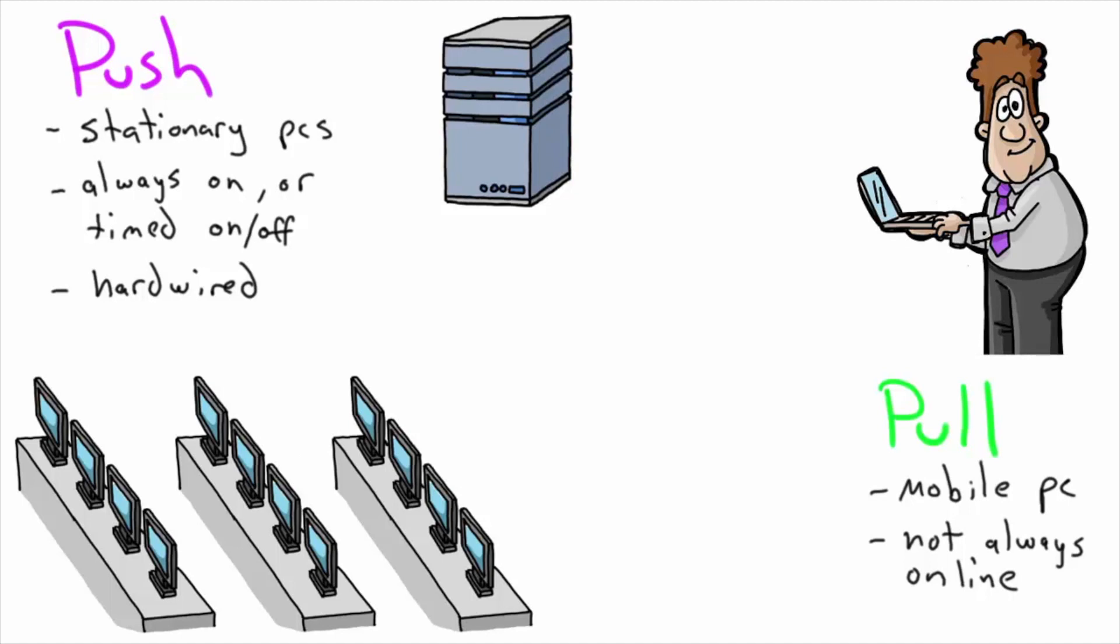Let's say we have a lab or cubicles with stationary computers. They're going to sit here, not going home, usually turned on during the day, hardwired to the network. In this case, a push makes the most sense because there are all these computers. The server can push to each one in order so it doesn't tax its own resources. Since they're always here, a push scenario works.